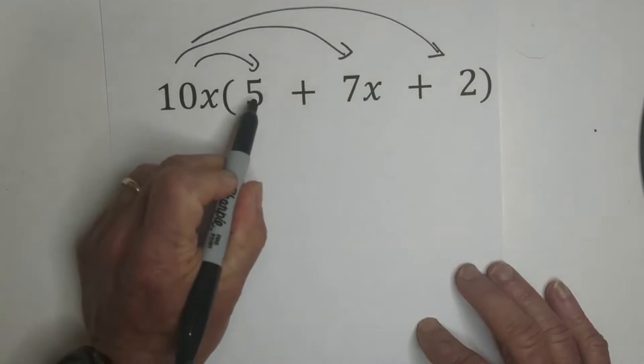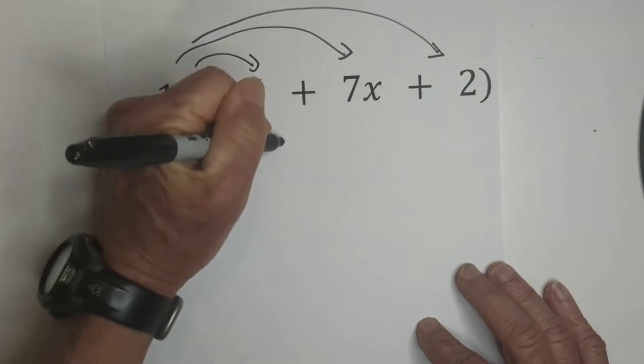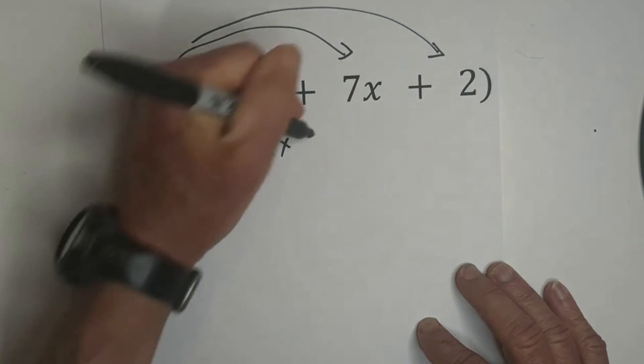We have 10 times 5, which is 50. 5 does not have an x, so we're just going to bring it down. Then we're going to add that. 10 times 7 is 70.